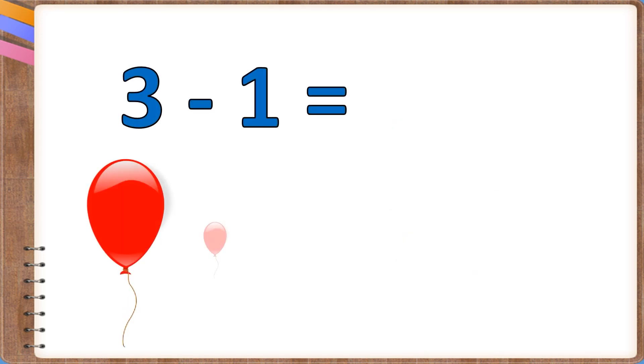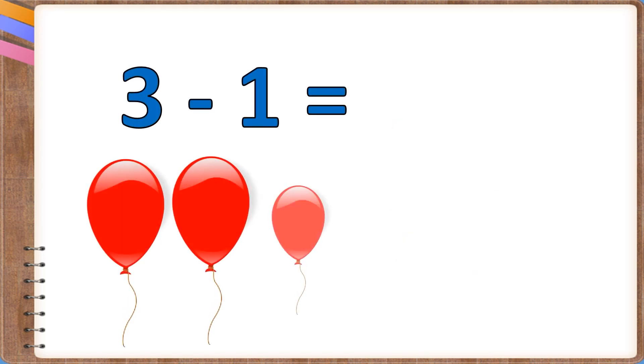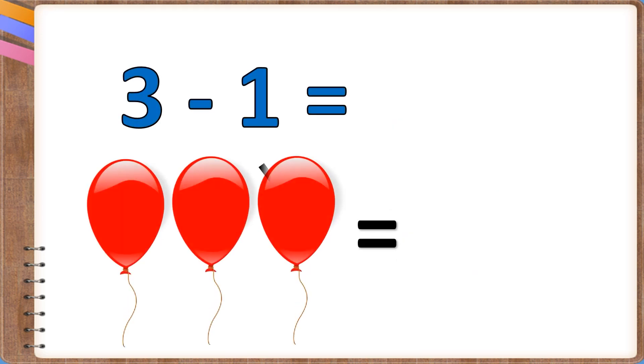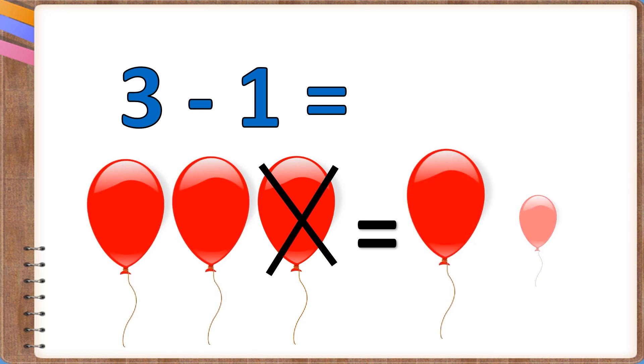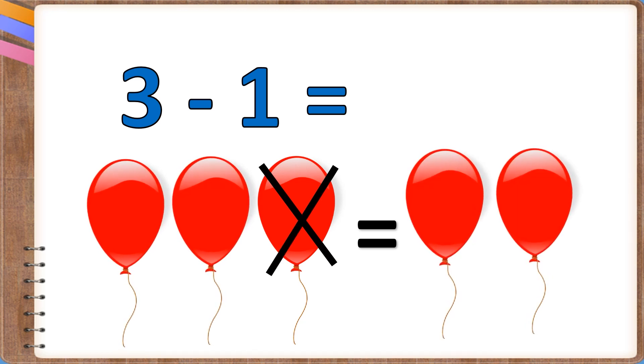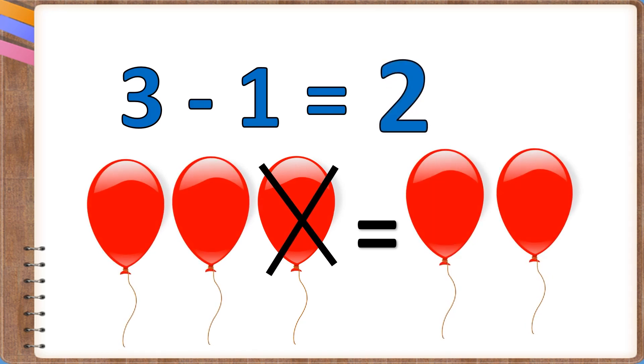3 minus 1. I had three balloons. I popped one balloon. There are two balloons left.